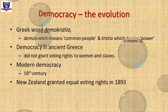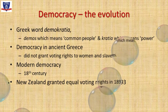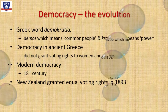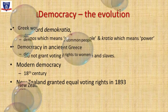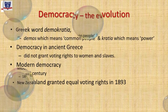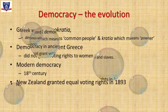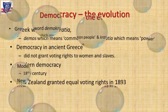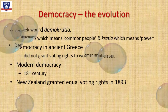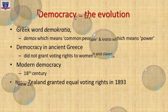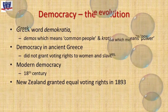Democracy has also changed over time. Democracy in ancient Greece did not grant voting rights to women and slaves. The modern understanding of democracy started taking shape in the late 18th century. New Zealand became the first nation to grant equal voting rights to all its citizens in 1893. Since then, many countries across the world adopted democracy and granted equal rights to all citizens. Democracy keeps on evolving and accepts changes as our understanding of equality and human rights grows over time.